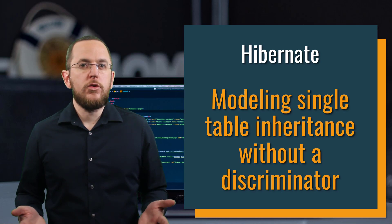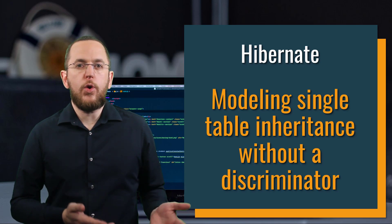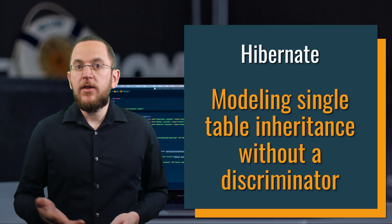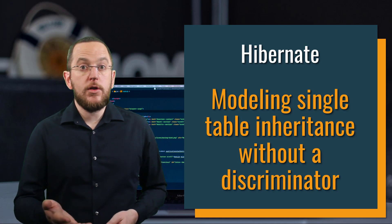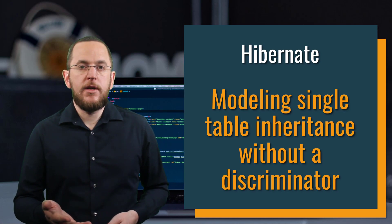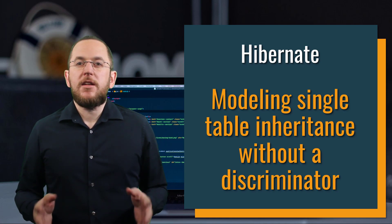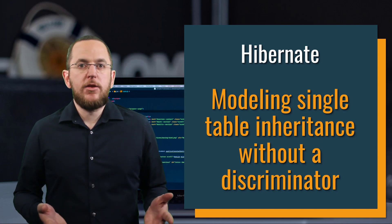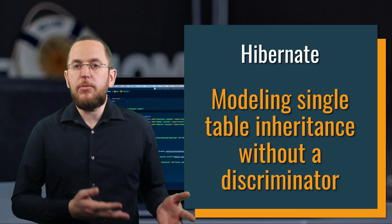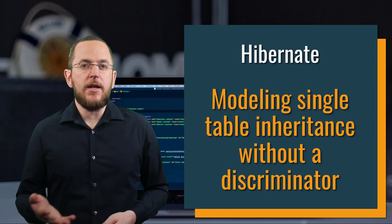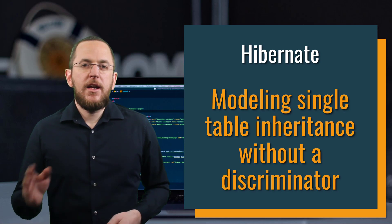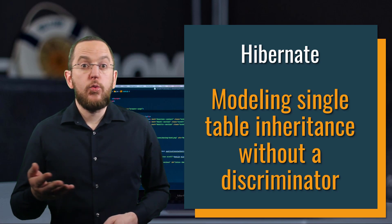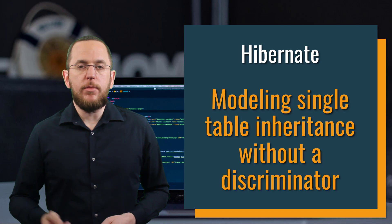But what do you do if you are working with an existing table model that doesn't contain such a column and that you are not allowed to change? The JPA standard doesn't provide a solution for this — it can't use inheritance type SingleTable without a discriminator column. But Hibernate does, if you can provide an SQL snippet that returns this information.